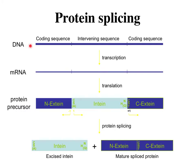In protein splicing, you have DNA with the coding sequence, the intein sequence, and the extein sequences. This is transcribed into mRNA, which is then translated into a protein precursor in which the exteins flank the intein. At the fusion site between the N-terminal extein and the intein, and the fusion site from the intein to the C-terminal extein, specific residues are important. Protein splicing then occurs where the two exteins join to generate the mature spliced protein and the intein is excised.